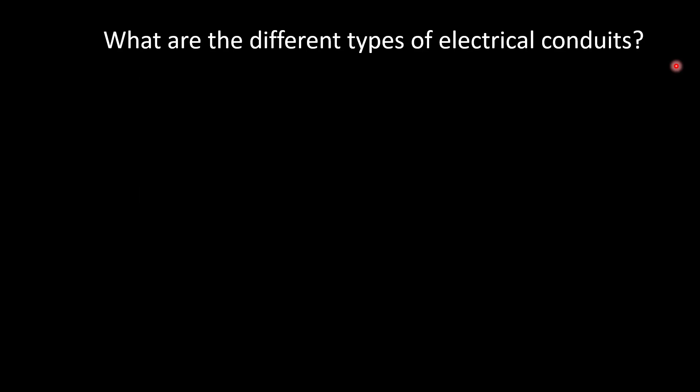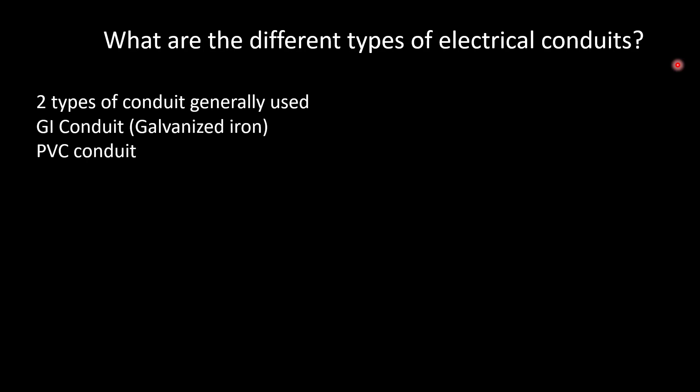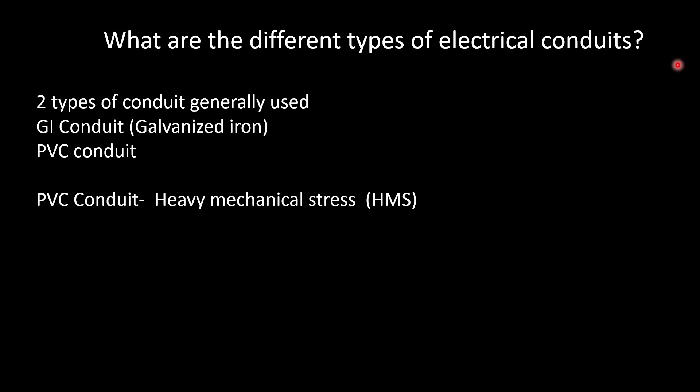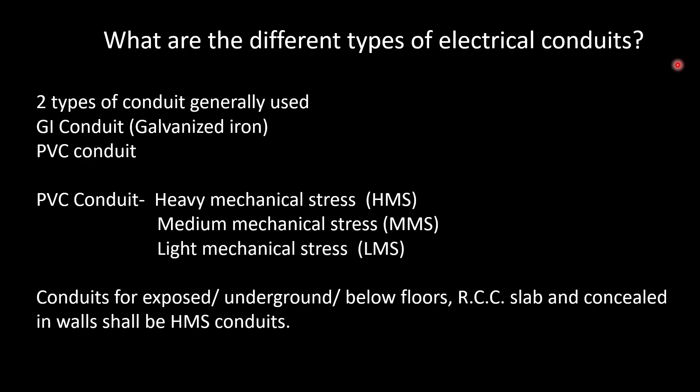What are the different types of electrical conduits normally used? We use two types: GI (Galvanized Iron) conduit and PVC conduit (a plastic conduit). PVC conduit can be classified into three types: Heavy Mechanical Stress (HMS) conduit — thicker and can sustain more mechanical stress; Medium Mechanical Stress (MMS) conduit; and Light Mechanical Stress (LMS) conduit. Conduits for exposed, underground, below floor, RCC slab, and concealed-in-wall installations shall be HMS conduits — also commonly called heavy duty conduit. GI conduits are normally used in exposed installations such as parkings and inside shafts.